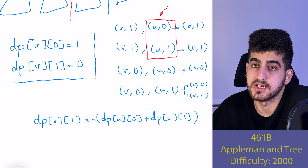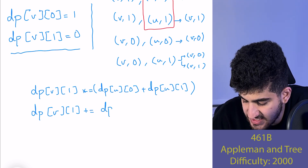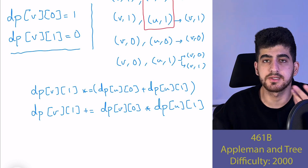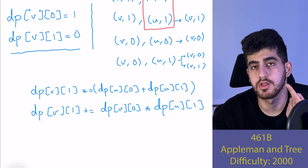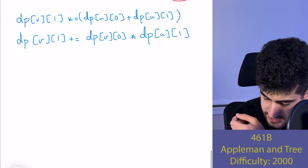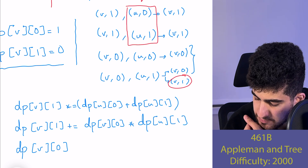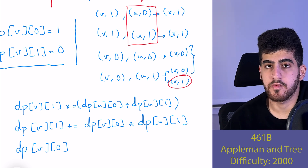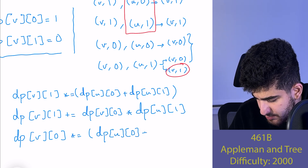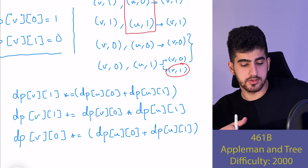The update formulas are: dp[v][1] = dp[v][1] * (dp[u][0] + dp[u][1]) + dp[v][0] * dp[u][1], and dp[v][0] = dp[v][0] * (dp[u][0] + dp[u][1]). We take all values modulo 10^9 + 7.